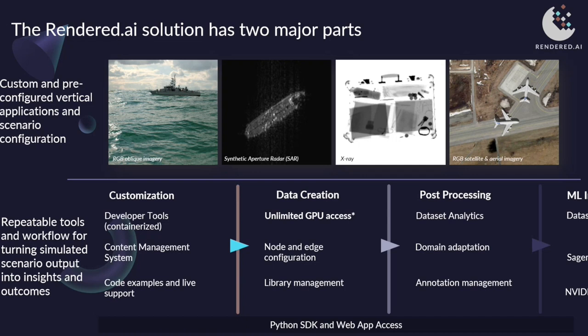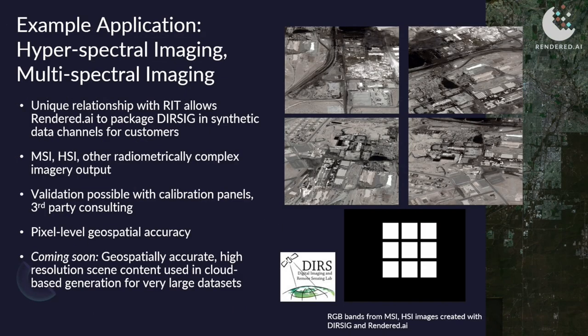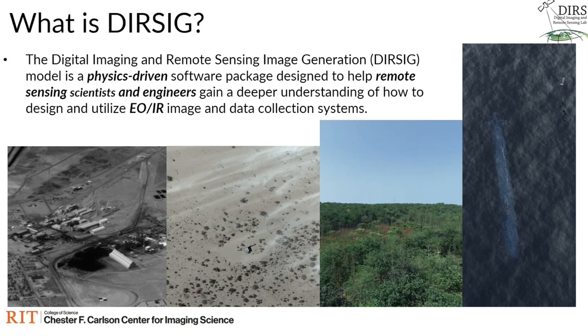Here are some examples of different use cases our customers have had. One example application we'll highlight is the integration with DIRSIG. DIRSIG is a tool set for simulating remote sensing data, and as Scott will get into, it has a long heritage of doing that. We've done this with several customers and are excited to share our findings and get more people the ability to generate synthetic data using DIRSIG and the Rendered AI platform. So with that, I'll hand it over to Scott to give an overview of what DIRSIG is.